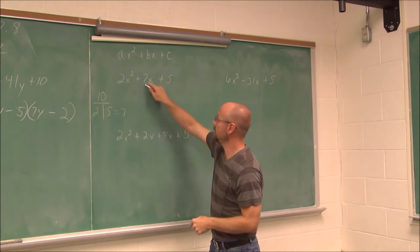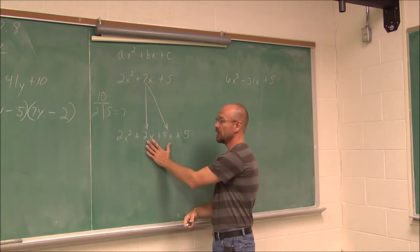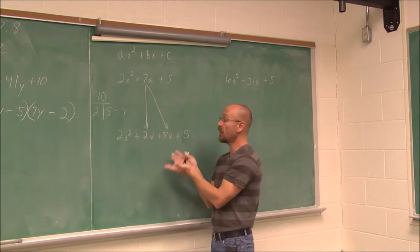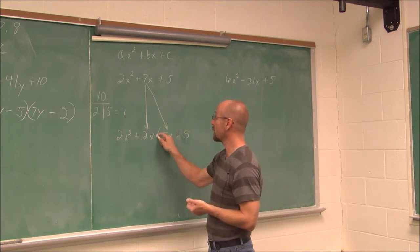And the reason why I said it's also called the AC method factor by grouping is because after we find AC, we use these values to factor this by grouping. Essentially, what I'm going to do is I'm going to take this middle term and break it into two terms. Well, what two terms do I break it into? These right here, the factors that I found here. 2x squared plus 2x's and 5x's plus 5, my C value. Now, if we think about what I did here, I just split up the middle term. And if we add these together, 5x and 2x is still 7x. So I didn't change its value. I just wrote it as a four-term polynomial. Now I can factor by grouping.